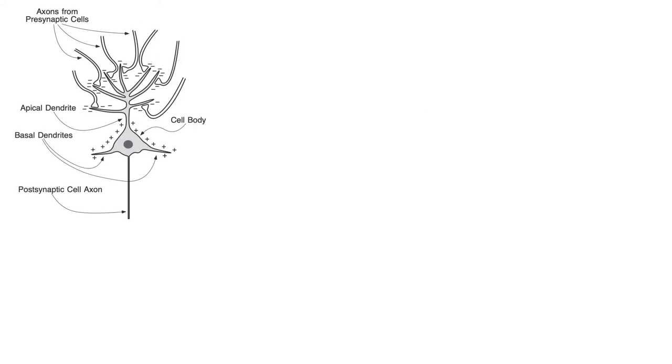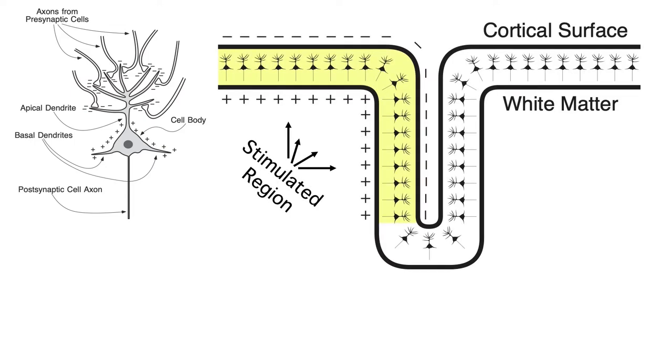Of course, the voltage generated by a single neuron can't be recorded from the scalp. To see a measurable voltage in our scalp electrodes, many neurons must be active at the same time, as shown here.